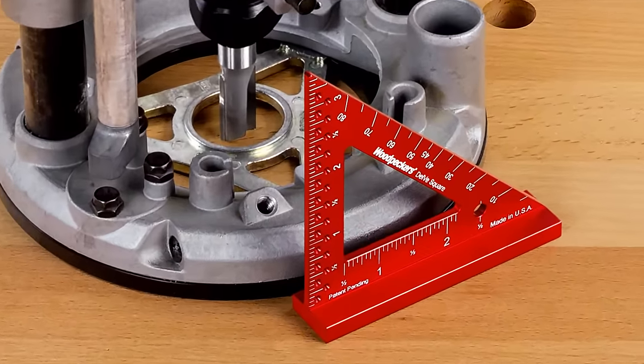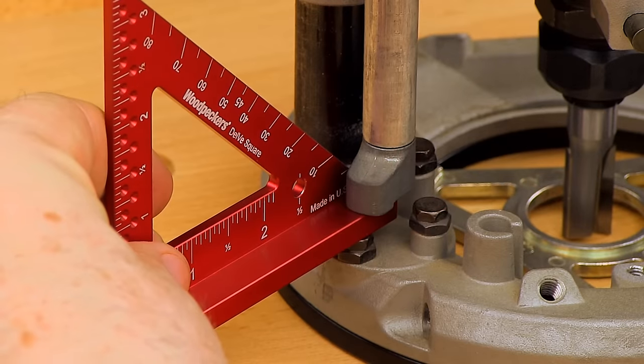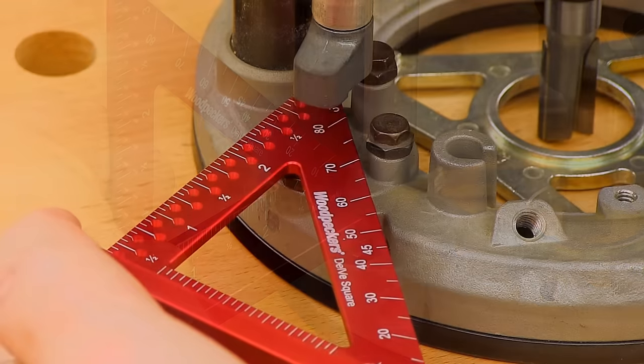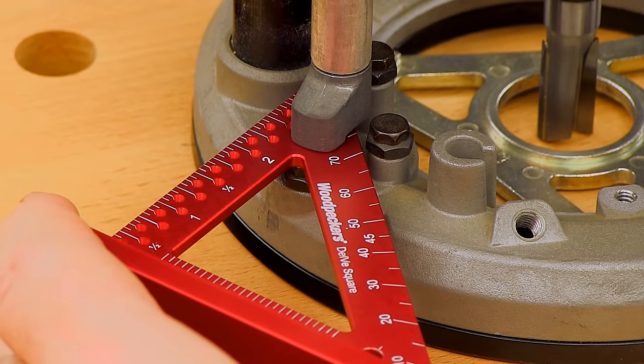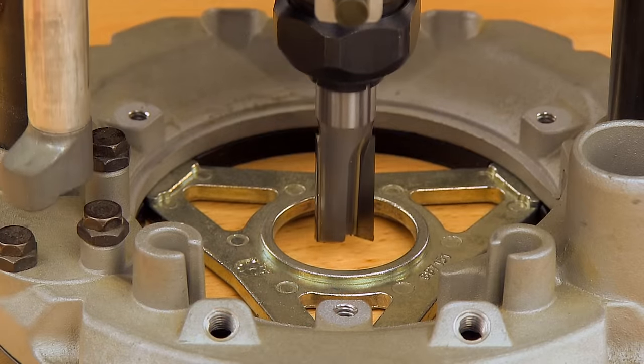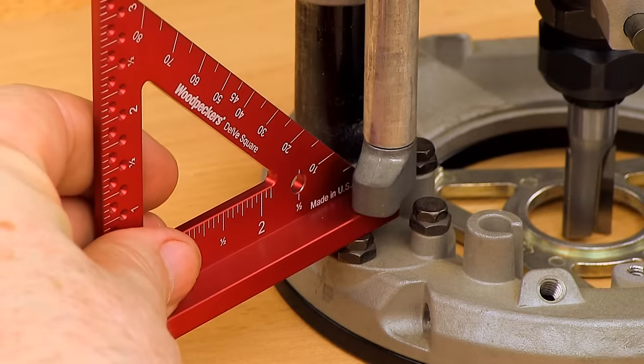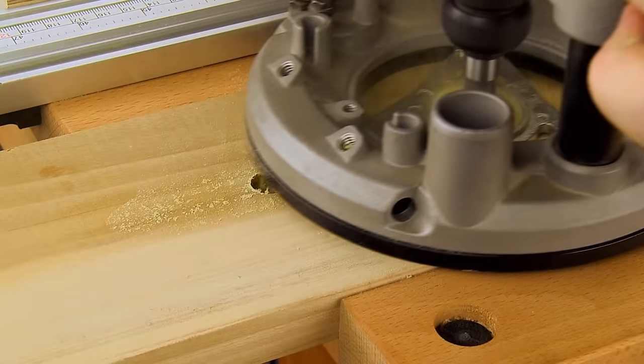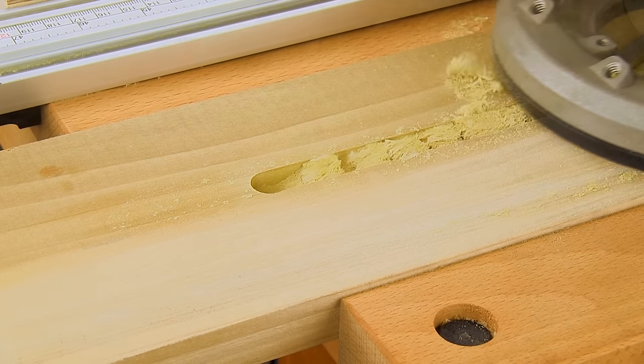To set up your router for depth of cut adjustments, use the square's ¼ inch thick base or the 1 eighth inch thick right triangle. Simply zero out the bit to the router base, then set the router depth stop. Tedious trial and error adjustments are a thing of the past.